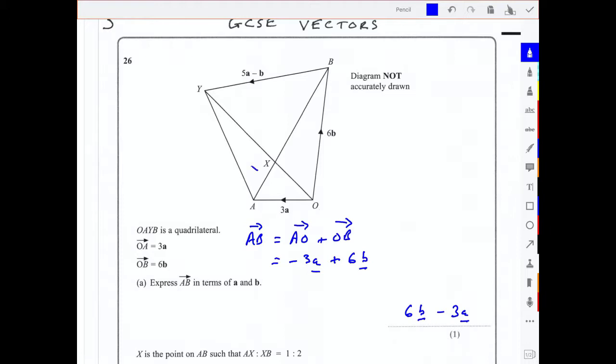So this splits this in the ratio 1 to 2, which means that AX is 1 third of AB. It's been split into three parts, AX is one of them, so it's 1 third of AB and we'll need that in the next part.